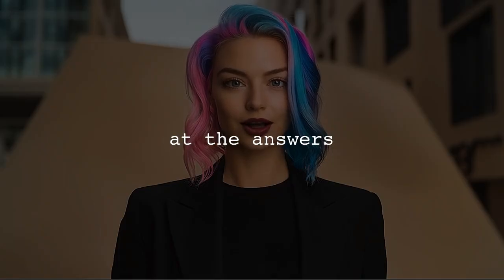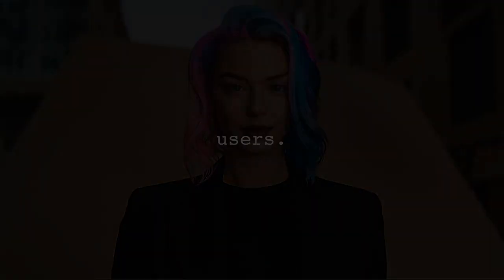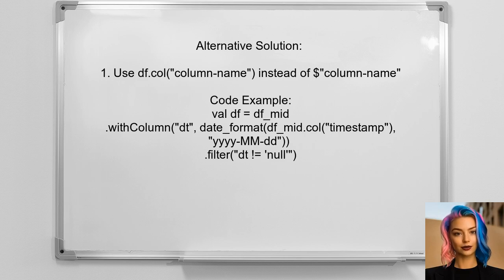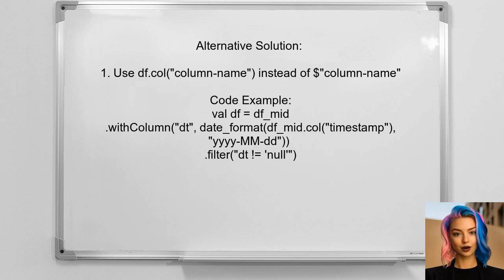Now let's look at answers provided by other users. One user found a solution by using the DataFrame's col method. Instead of using the dollar sign syntax, they accessed the column directly with df.col(column-name). This approach worked for them in Spark version 1.6.